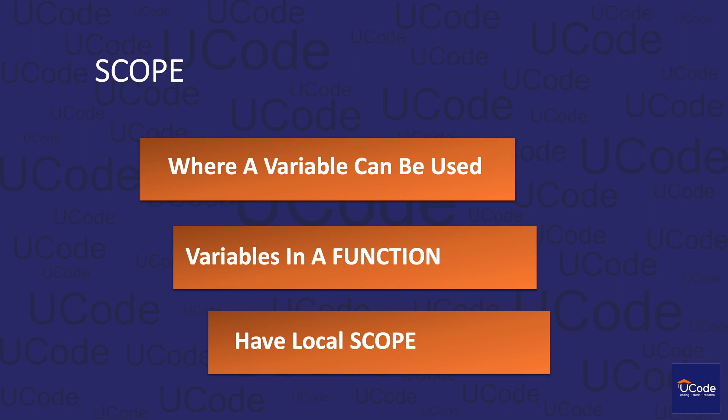Now, there's an important concept you need to know with respect to variables. All the variables in Python have scope. What is scope? Scope is the area in which the value of a variable is correctly identified. Variables that are defined inside a function have local scope — that is, their value is correctly identified only inside the function. There are also global variables, whose value is identified throughout the entire program.